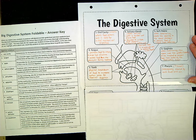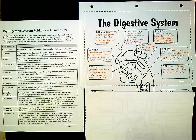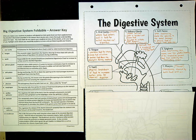Now that you have assembled your digestive system foldable, you are going to be identifying certain digestive structures and also putting in your own words what the function of that digestive structure is. So let's go ahead and do numbers one through three together.